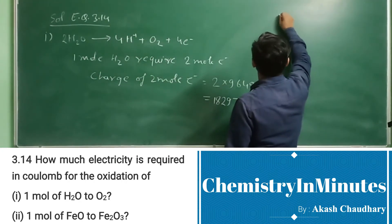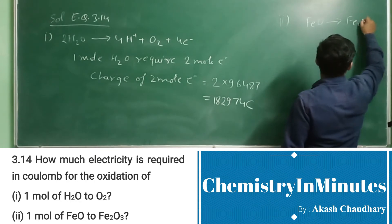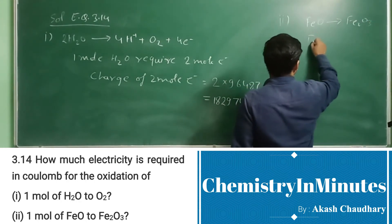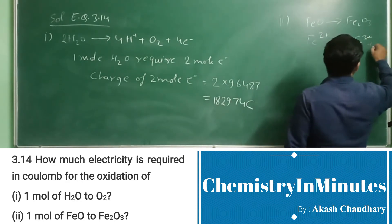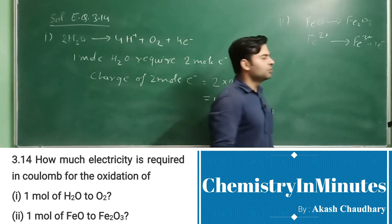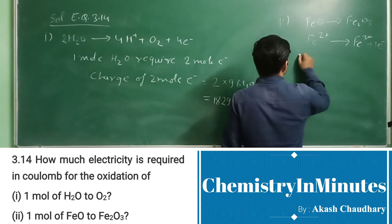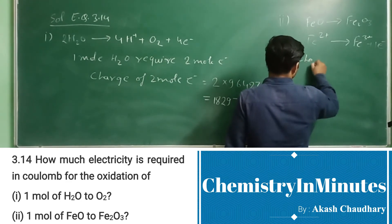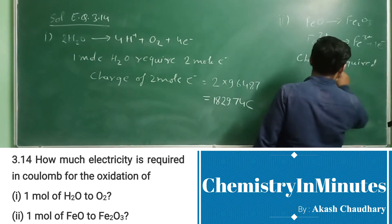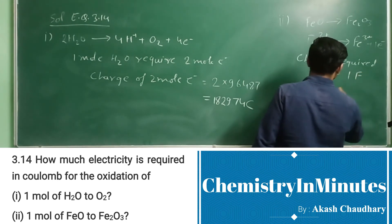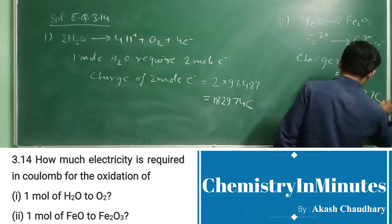Now for the second part: FeO to Fe₂O₃. Here, the oxidation is Fe²⁺ to Fe³⁺, and this is done by using 1 electron per Fe²⁺ ion. So the charge required equals 1 Faraday, that is 96487 Coulombs.